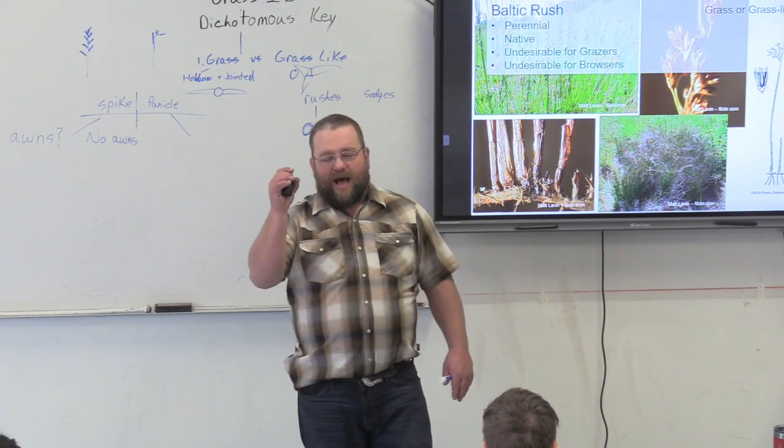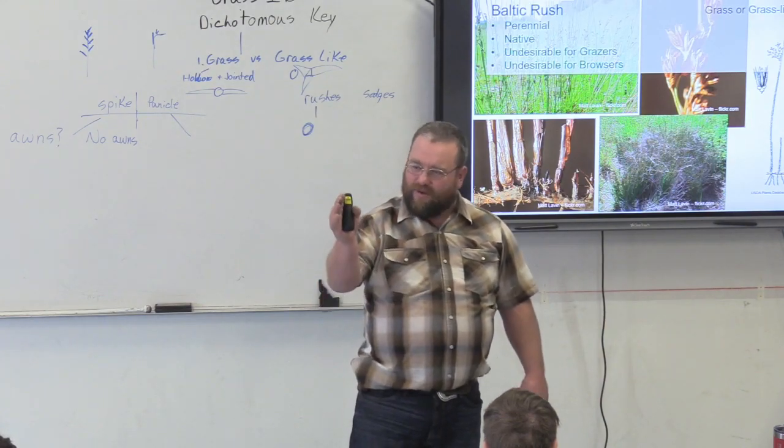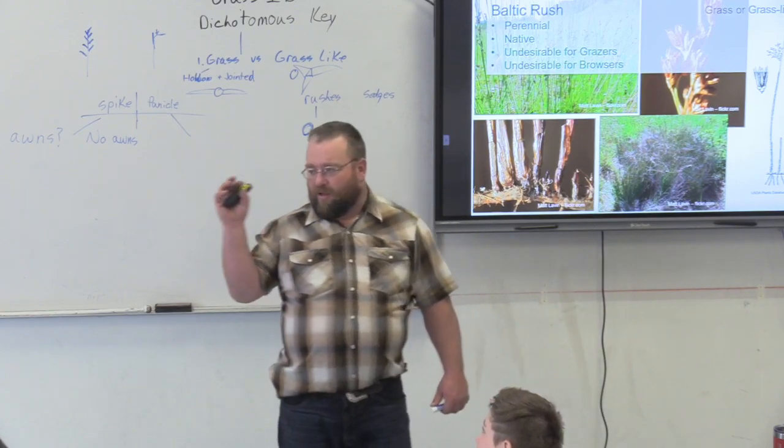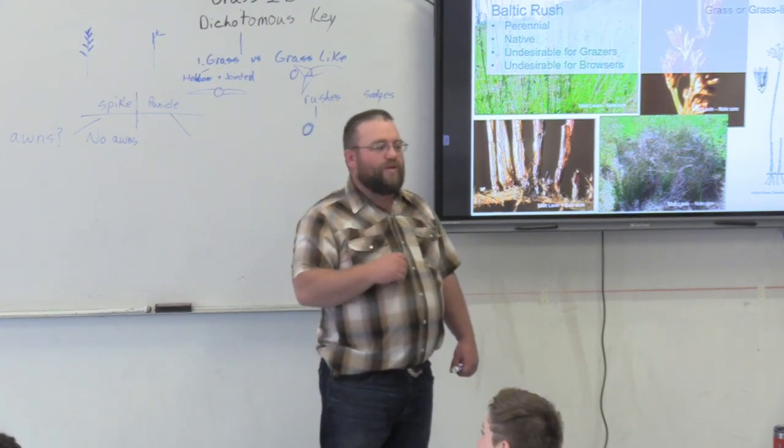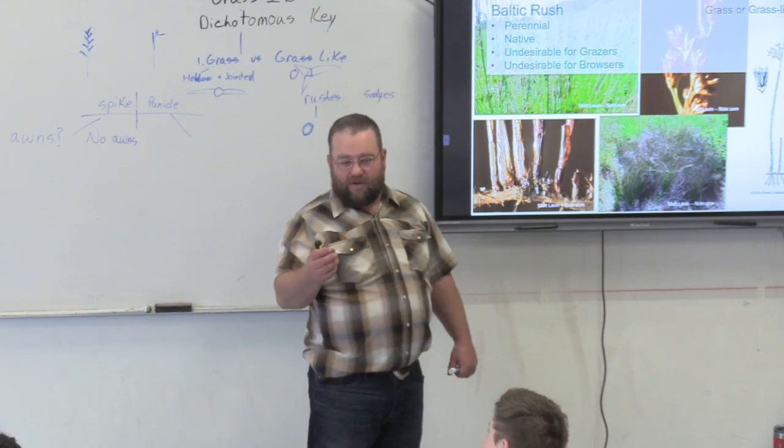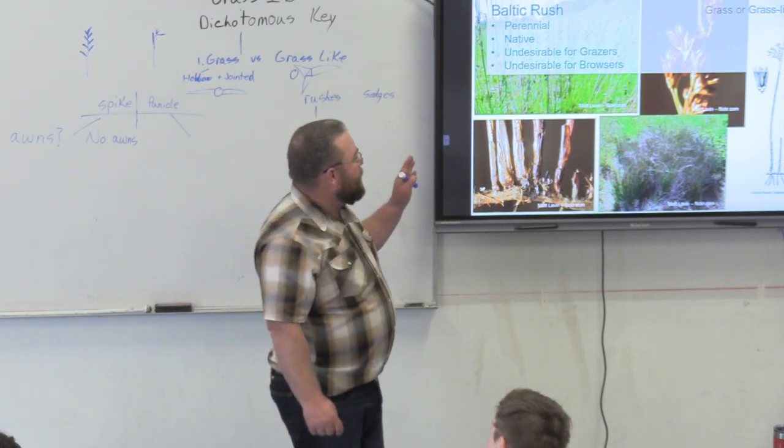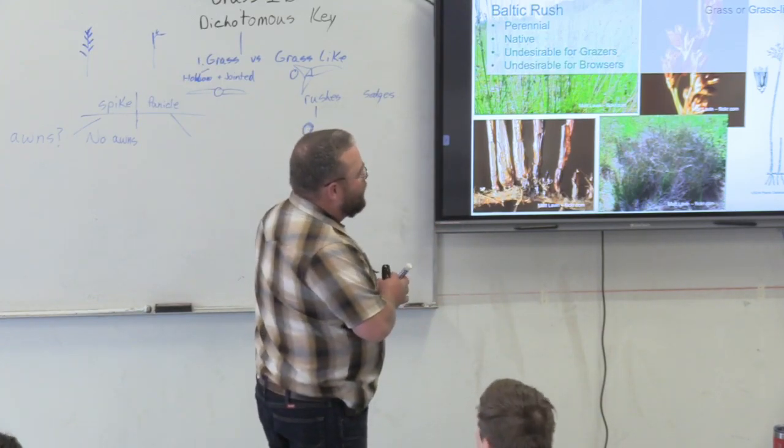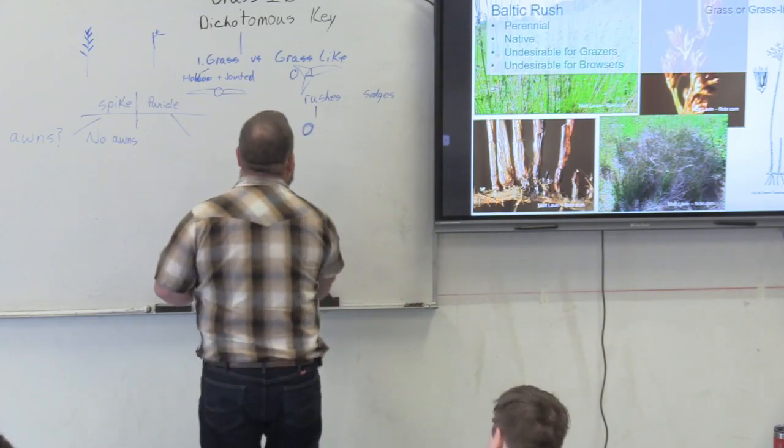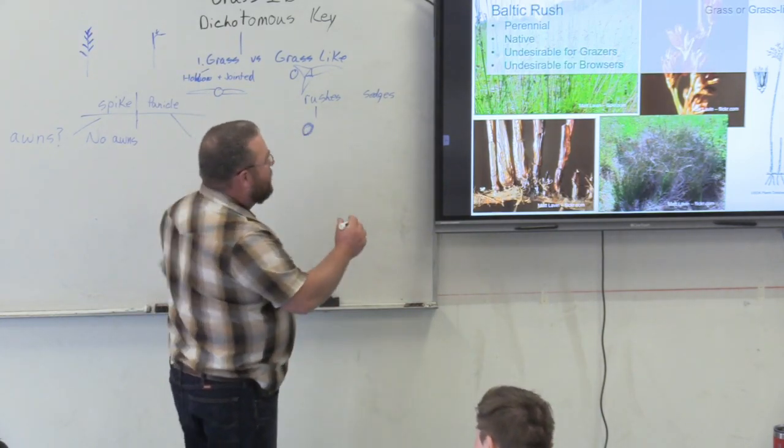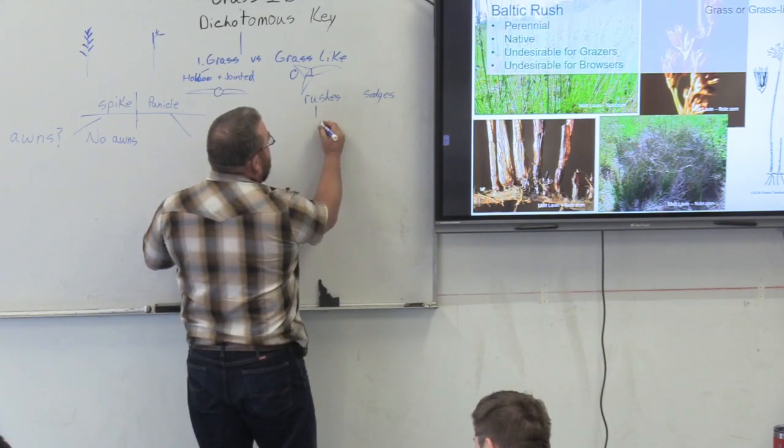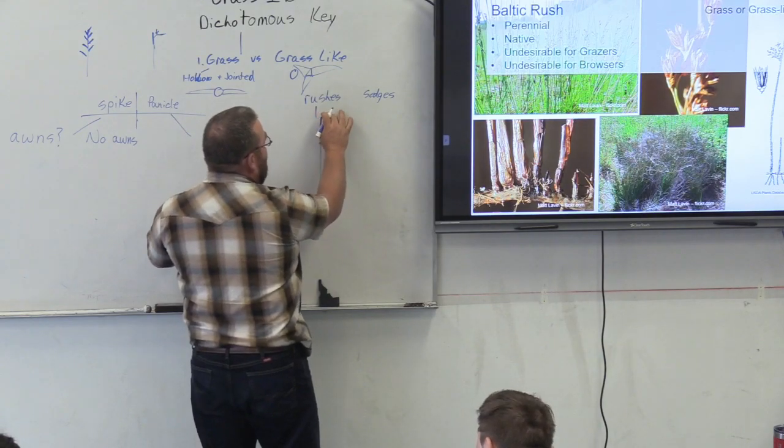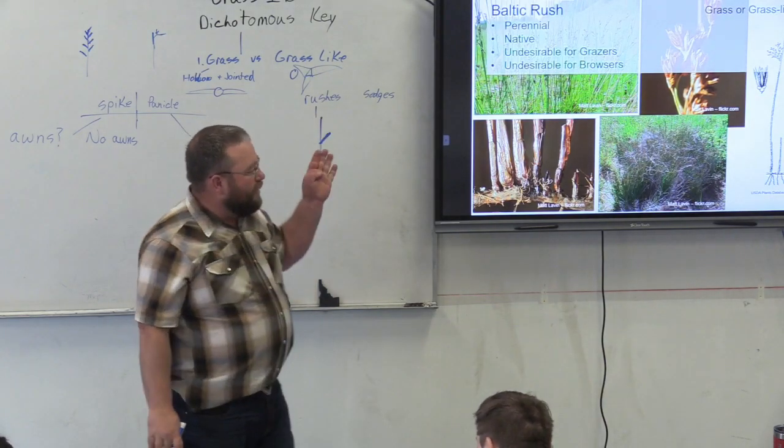Undesirable or desirable refers to grazers and browsers. A grazer is an animal that selects for grass, like a cow or elk, cattle, sheep. Browsers would be like deer and goats. They select for forbs and woody plants. If we take a look at a rush, it is not jointed, it's basically one spike, and the floret or seed head would be on the side and nothing on the top.